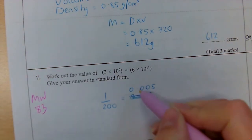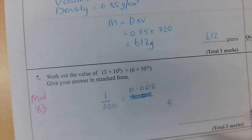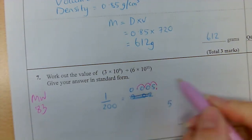It wants it in standard form, so what I need to do is work out what goes at the front. Well, it's going to be a 5, so my new decimal point is going to go here. How many times have I moved it? 1, 2, 3.